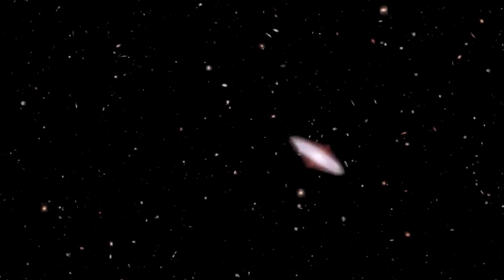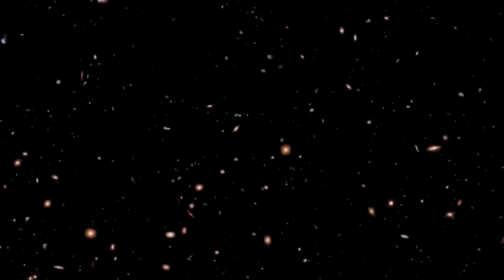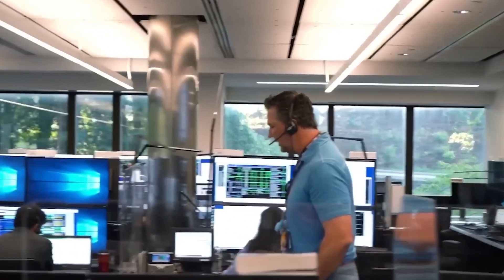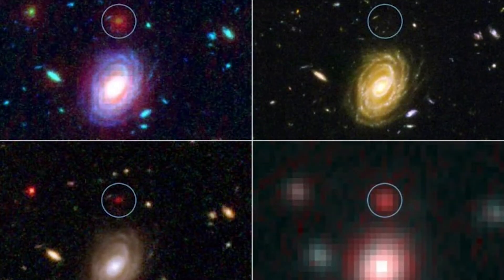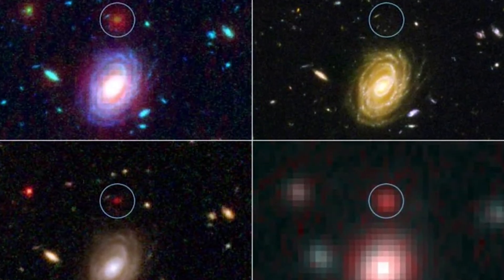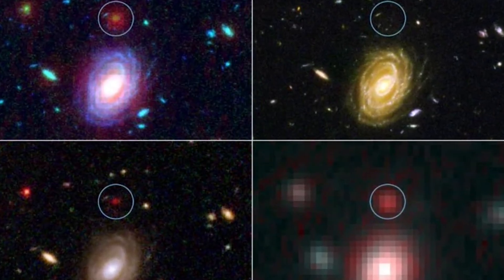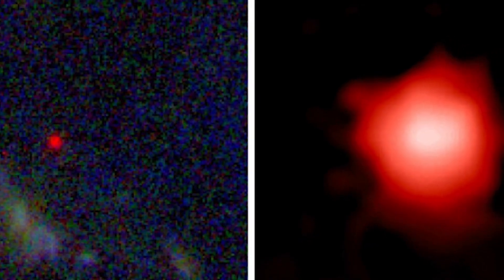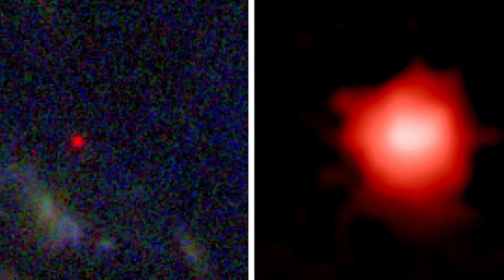Most recently, Webb once again peered back into the universe's first 500 million years. What it found left researchers stunned. Galaxies that should have still been toddlers were already enormous, heavy with stars, and far more developed than anyone expected. Among them is a galaxy that may be one of the oldest ever witnessed. What's jaw-dropping is that this ancient structure already contains billions of stars.